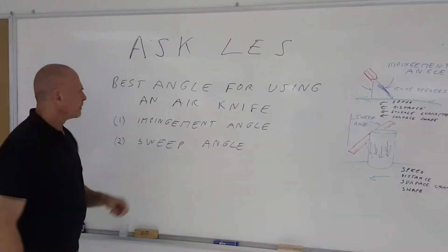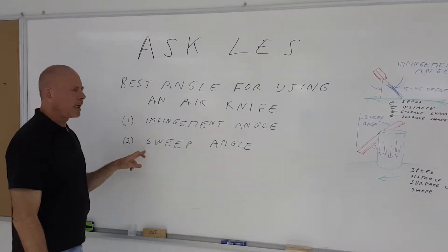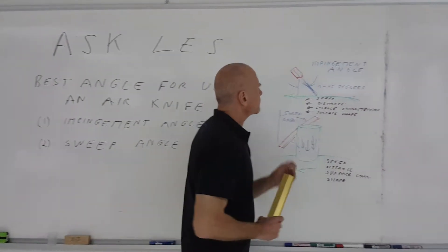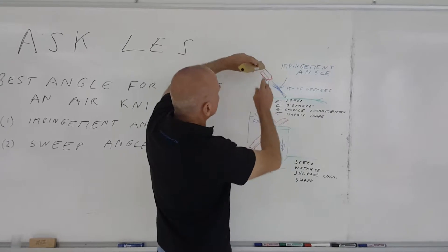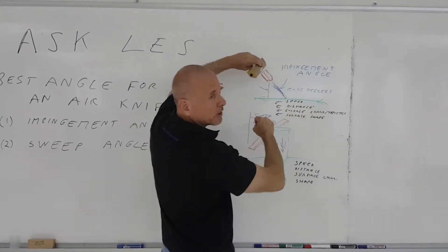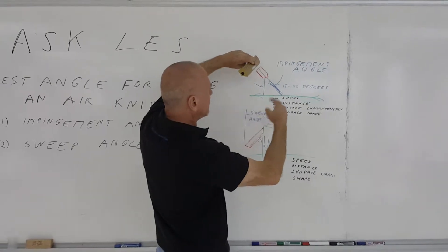There are two angles to consider: the impingement angle and the sweep angle. I'm going to show you what they are. The impingement angle is the actual angle that you have against the surface that you're blowing off, that you're either cleaning or drying.